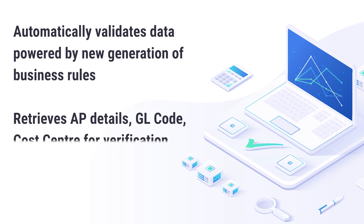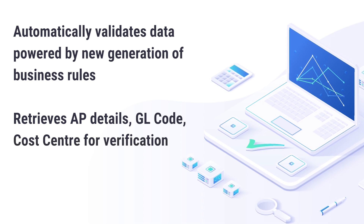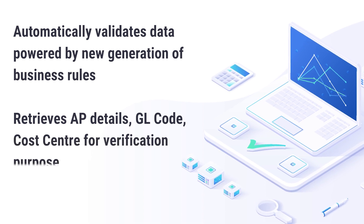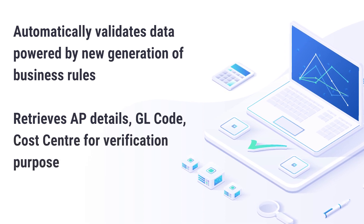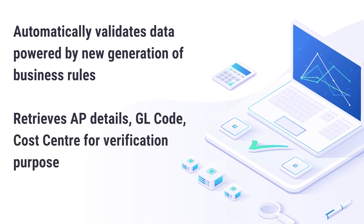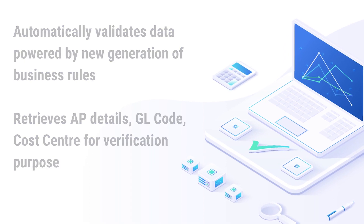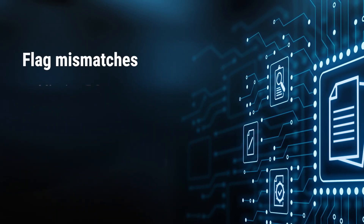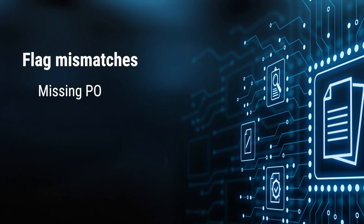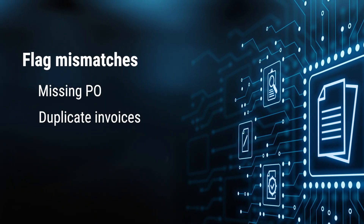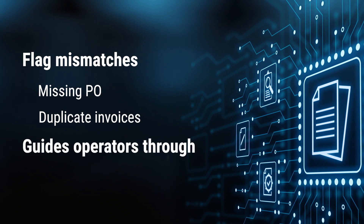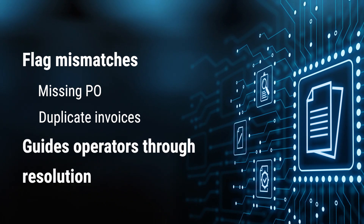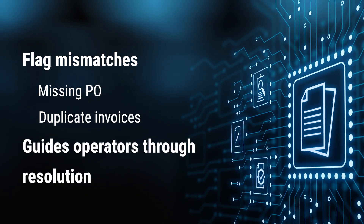It automatically pulls information like AP details, GL code, and cost center for verification purposes. The system notifies your AP team members if there are data mismatches and guides the operator through the resolution process.